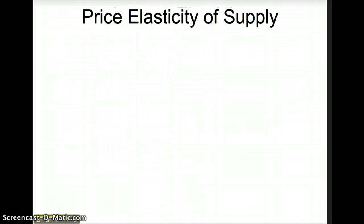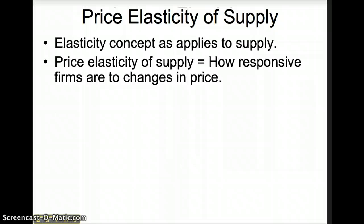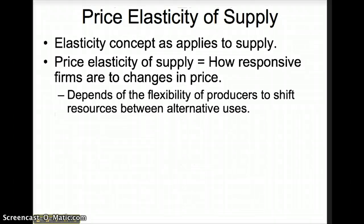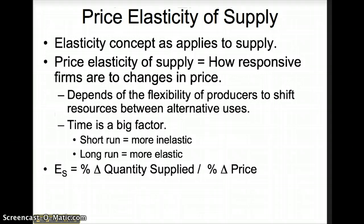The last type of elasticity is price elasticity of supply. The first three types of elasticity were all related to demand, but the concept of elasticity can also be applied to supply. Price elasticity of supply measures how responsive firms are to changes in price. Supply elasticity depends on how flexible producers are to shifting resources between alternative uses — time is a huge factor. In a short period of time, producers are less flexible to shift resources; however, over a longer period of time, producers are more flexible. The formula is the percentage change in quantity supplied divided by the percentage change in price. The midpoints formula can also be used to calculate supply elasticity.